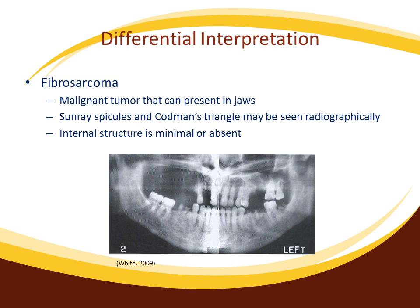Fibrosarcoma is also a malignant tumor that can be found in the jaws, specifically the mandible. Its radiographic appearance is very similar to osteosarcoma, possibly showing sunray spicules or Codman's triangle — a triangular shadow where the periosteum has been lifted away from the cortex. Fibrosarcoma can also present with pain and enlargement of bone, much like osteosarcoma. Its internal structure is minimal or absent, which can be a distinguishing feature if osteosarcoma displays internal radial opacities.